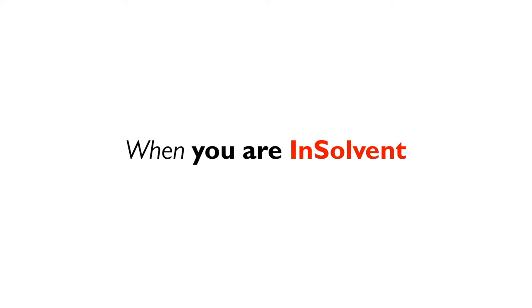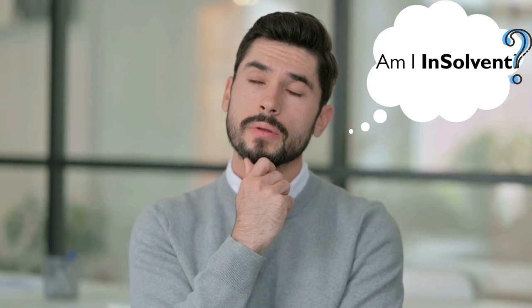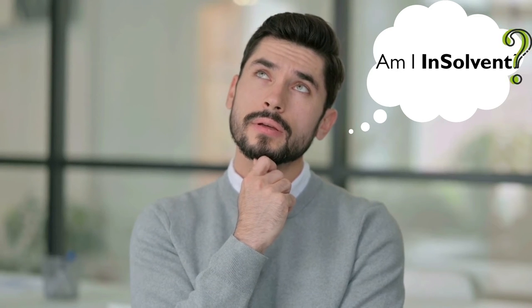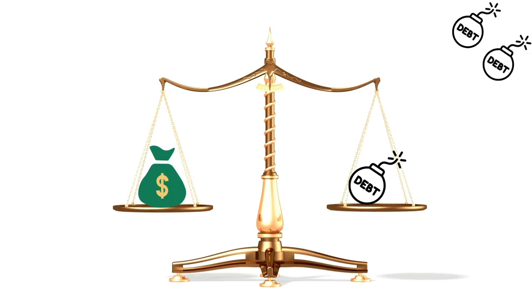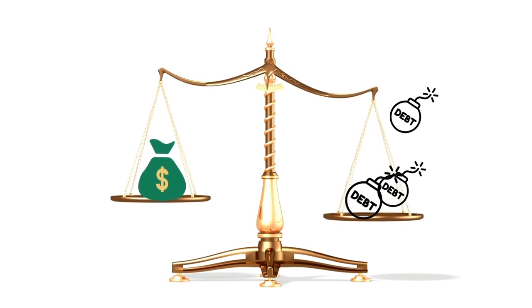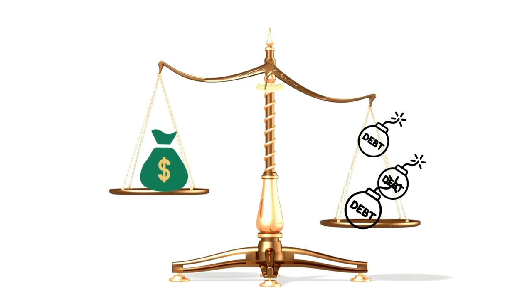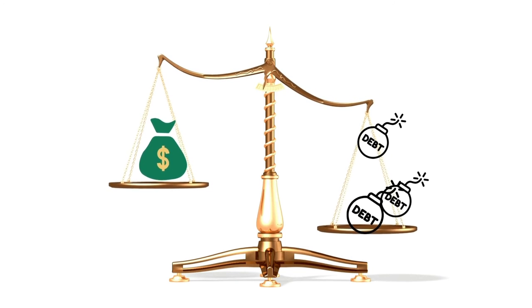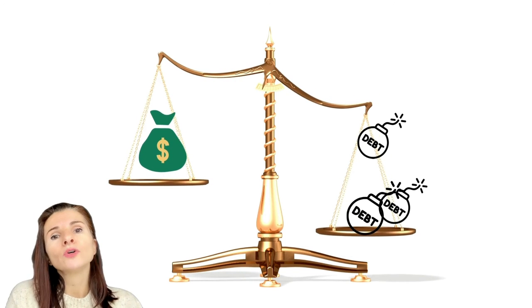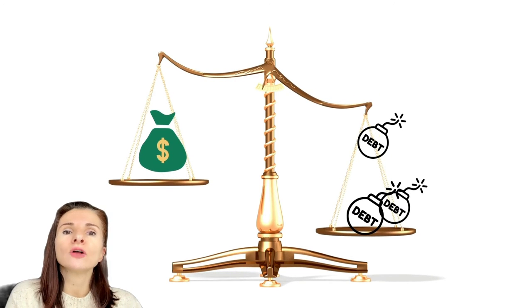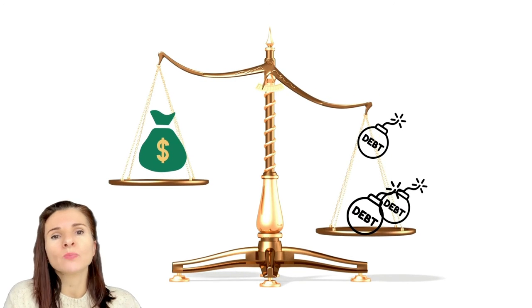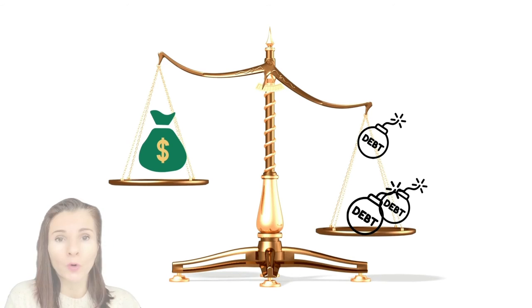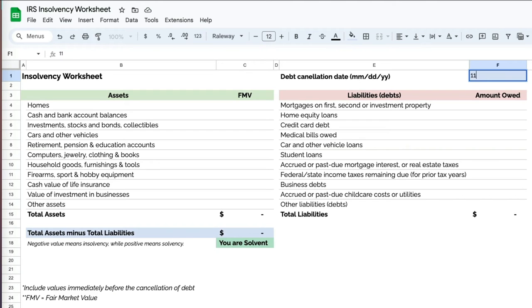Now, what happens when the situation is the same but James is considered insolvent — meaning the fair market value of all his assets is less than his liabilities? The amount or level of insolvency is expressed as a negative net worth.